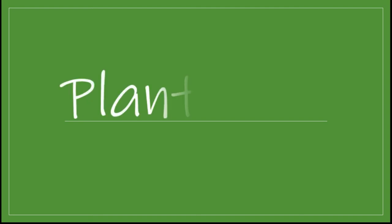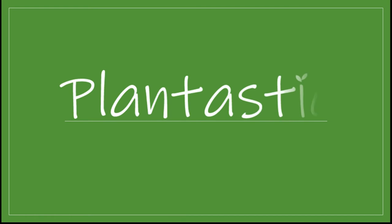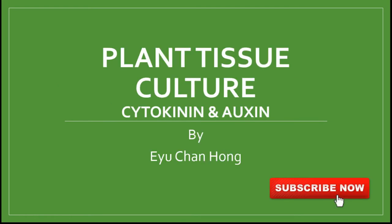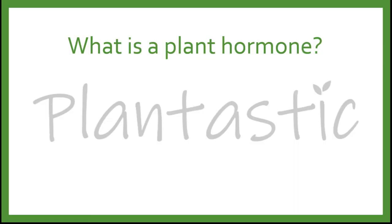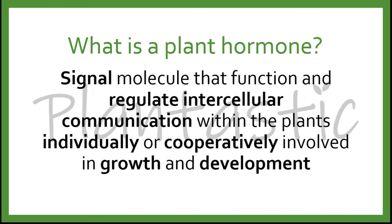Hello everyone, how are you today? Welcome to the YouTube channel Plantastic. Today we are going to focus on the most popular used hormones, which are cytokinin and osin, in plant tissue culture. Plant hormone is a signal molecule that functions and regulates the intercellular communication within the plants, either individually or cooperatively with other hormones, involved in the growth and development.